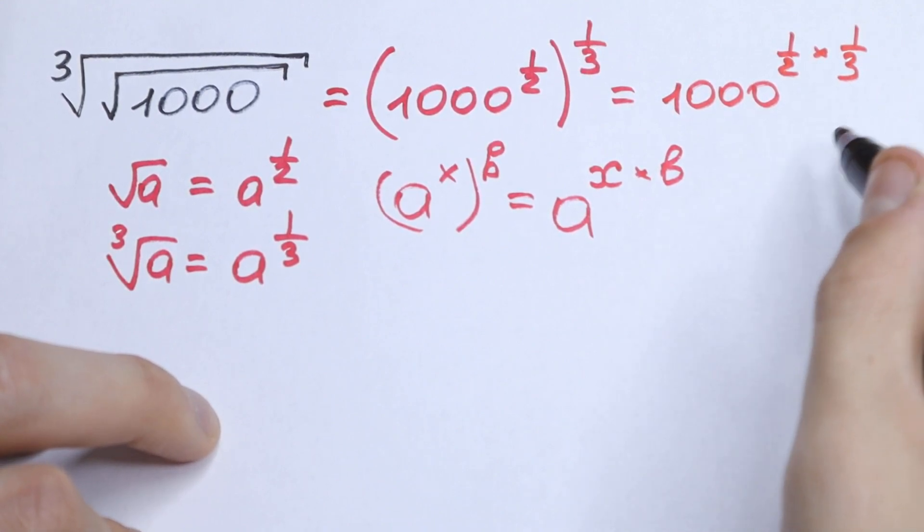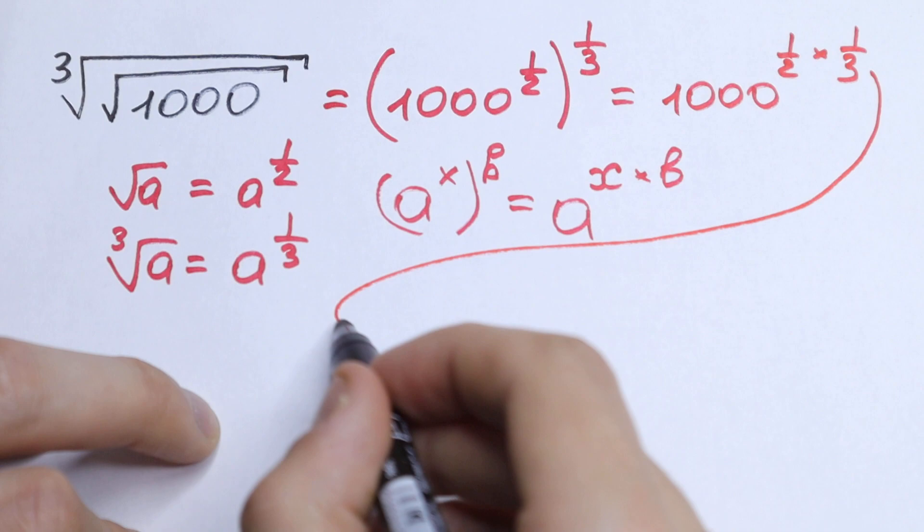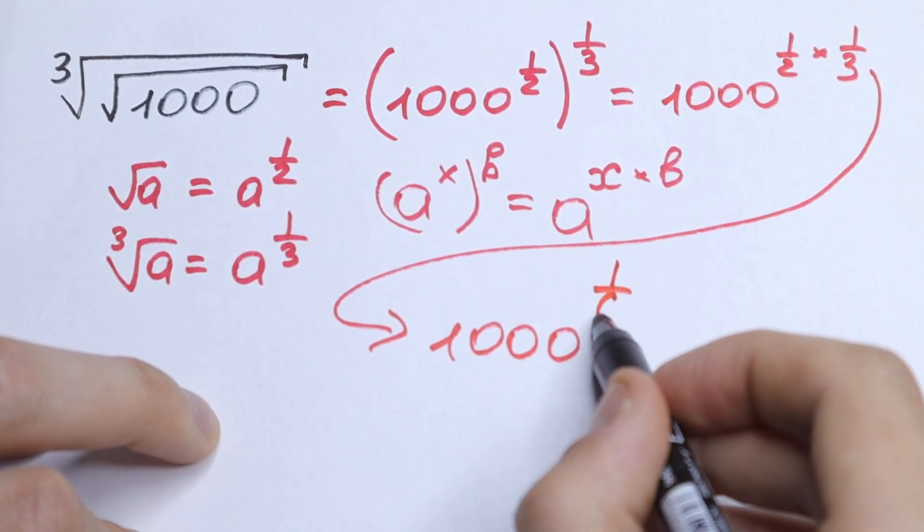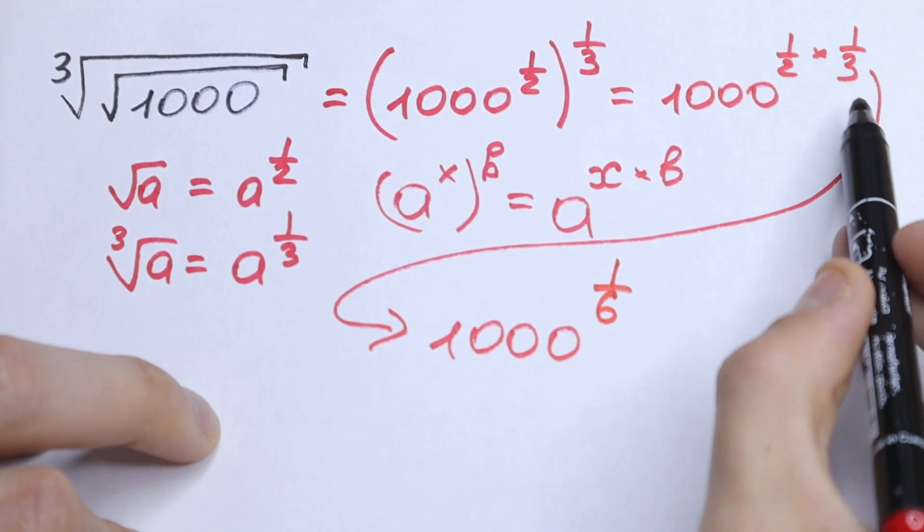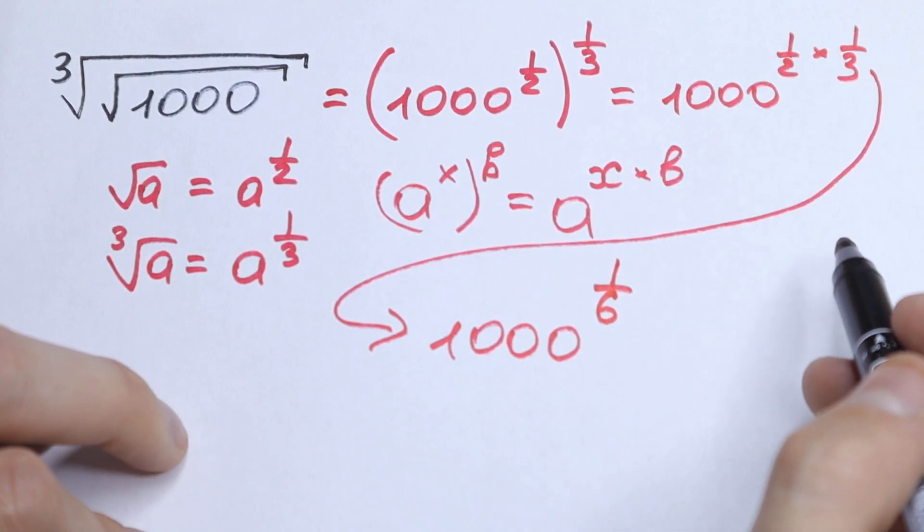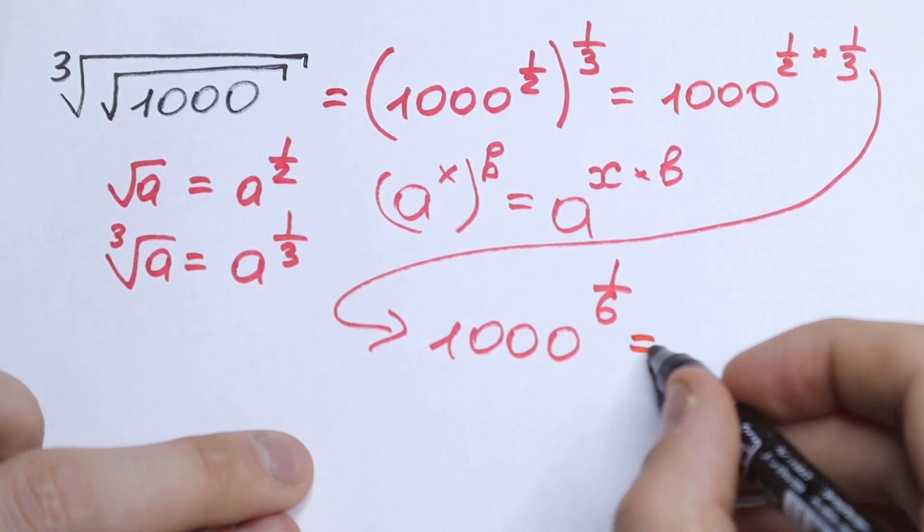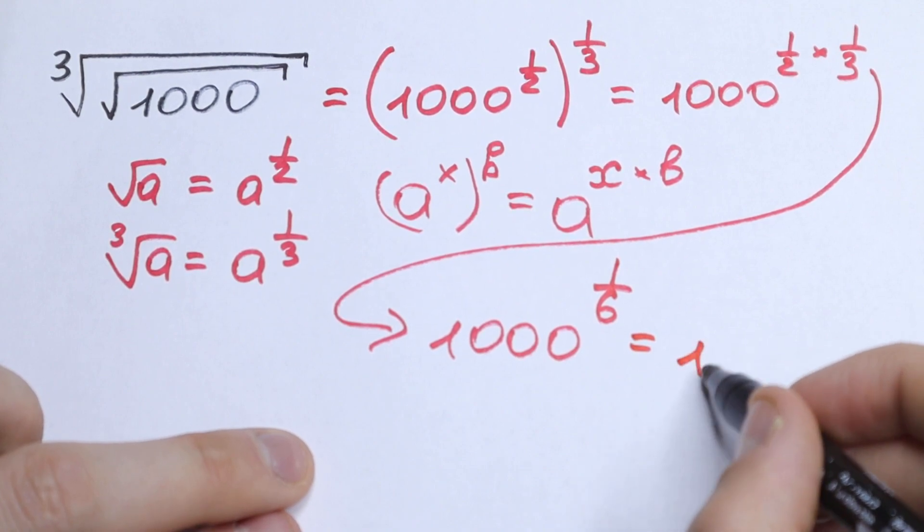What will we have as a result? As a result we will have 1000 to the power 1/6. Just multiply 1/2 times 1/3. What we're going to do next? Let's rewrite this power, this 1000, as for example 10 cubed.